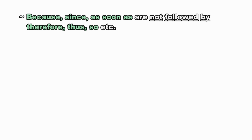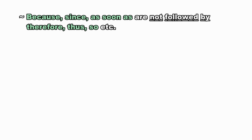In direct-indirect narration, questions are sometimes formed by placing 'that' before an interrogative word, which is incorrect. Now, before I start conjunctions which are used in pairs, let's look at one more small rule.